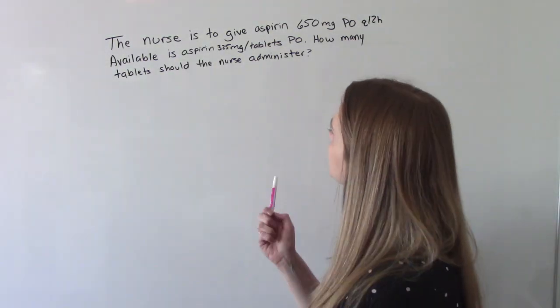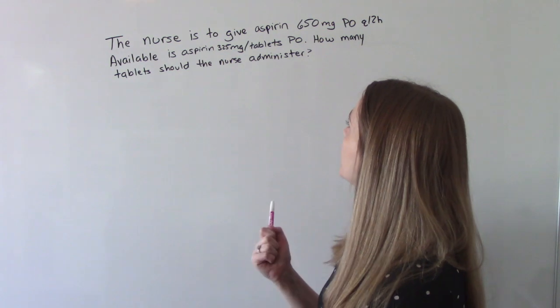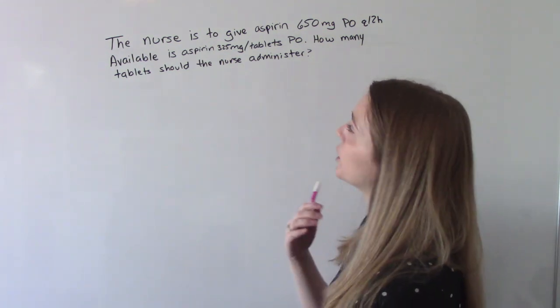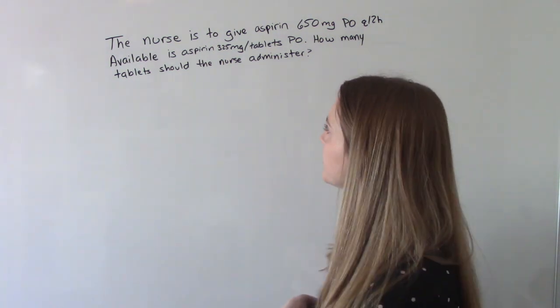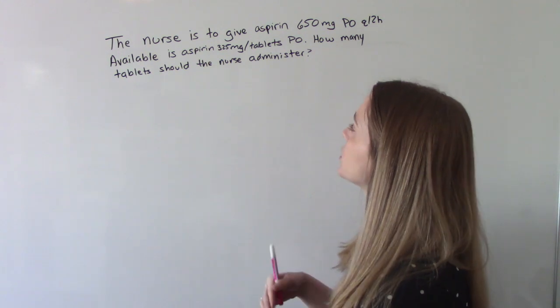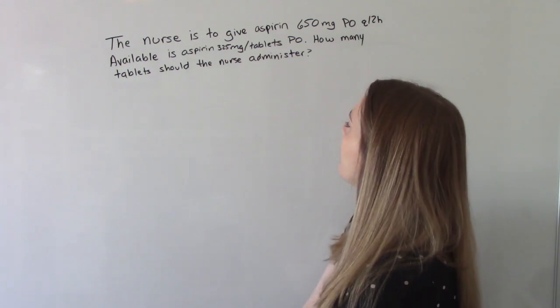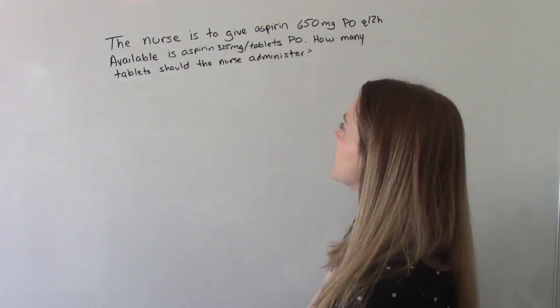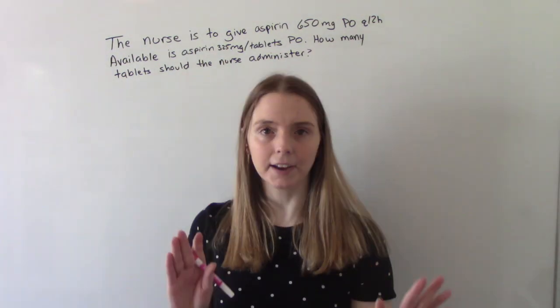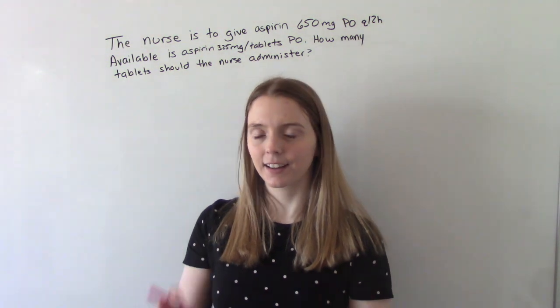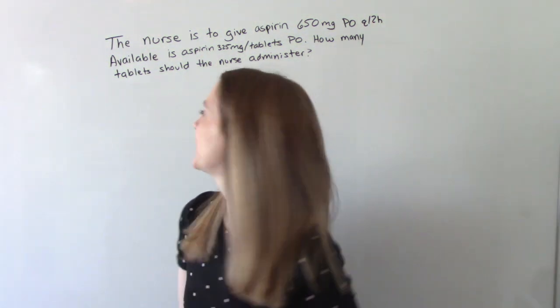The nurse is to give aspirin 650 milligrams PO Q12, so every 12 hours. Available is aspirin 325 milligram tablets, PO. How many tablets should the nurse administer? So I'll give you a sec to pause it, and we're back. Let's figure it out.